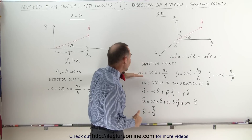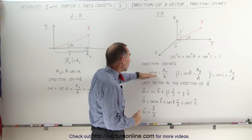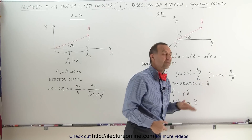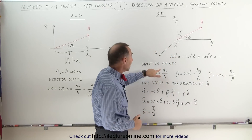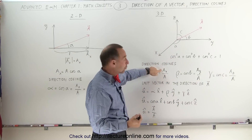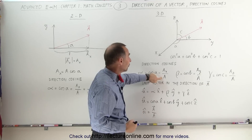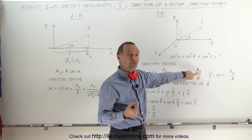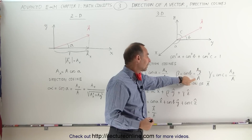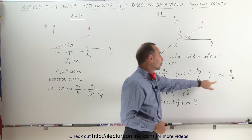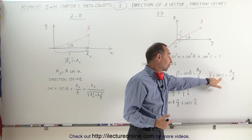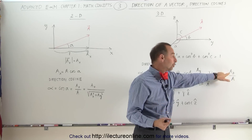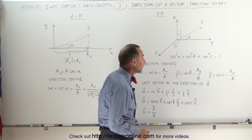The direction cosines are defined as: alpha is the cosine of A, beta is the cosine of B, and gamma is the cosine of C. They can be found by taking the magnitude of the x-component of vector A divided by the magnitude of A. The cosine of B is the magnitude of the y-component divided by the magnitude of the vector. And the cosine of C, the third direction cosine gamma, is the magnitude of the z-component divided by the magnitude of the vector.